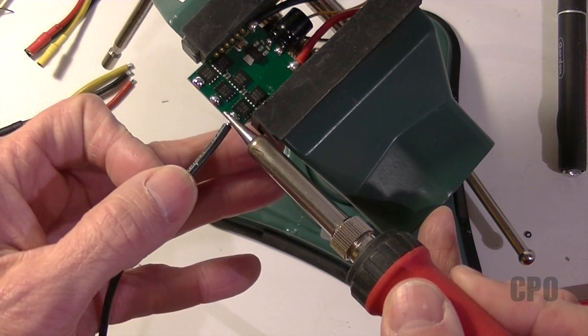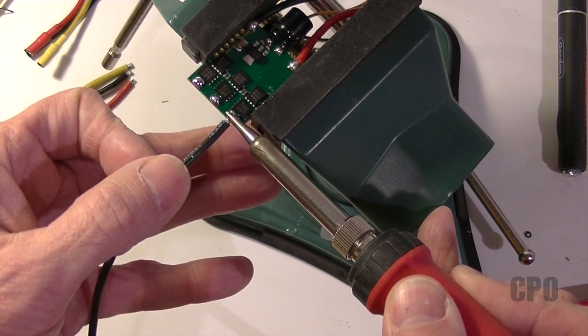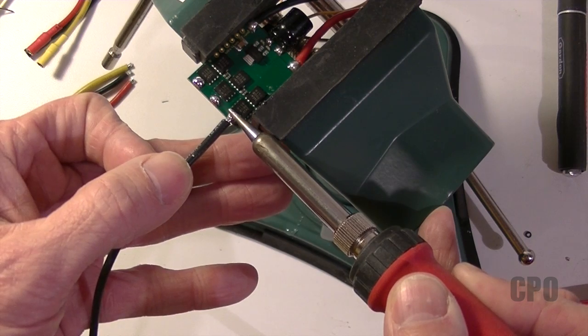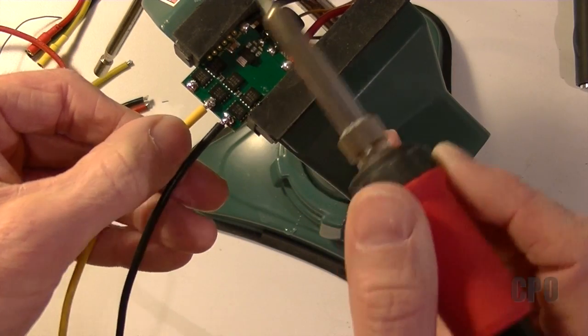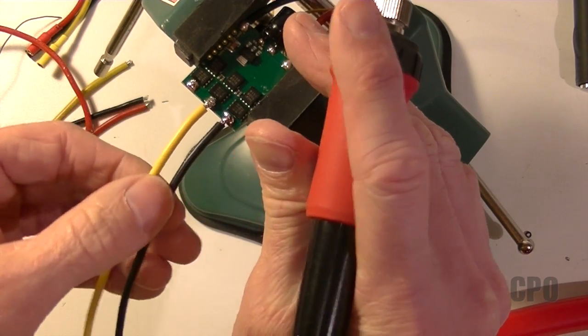And now I'm soldering on the new lengthened motor wires. I'm using the same color coding that was originally on the ESCs.